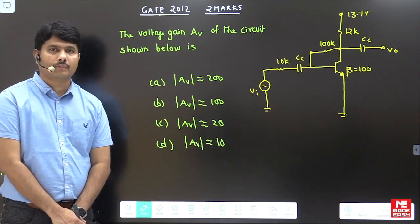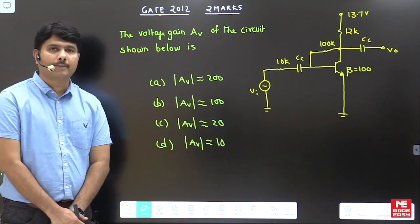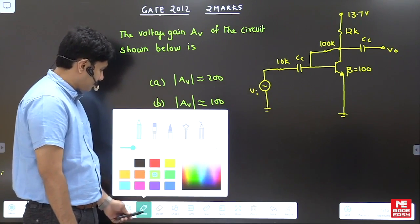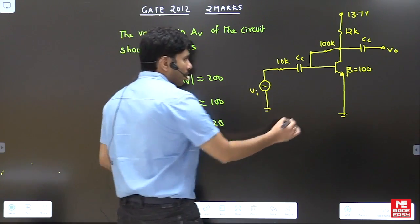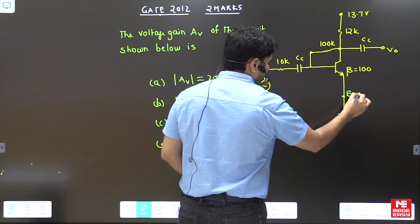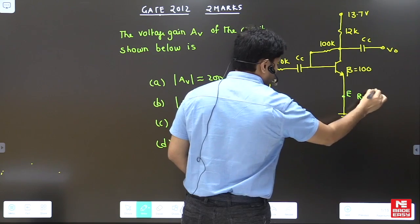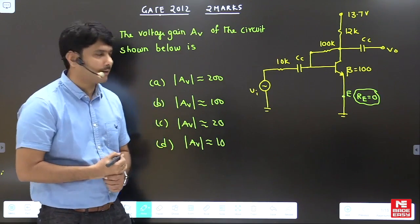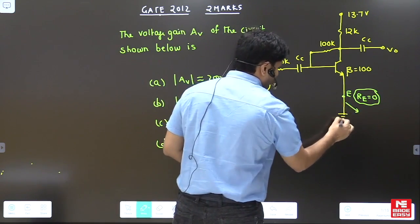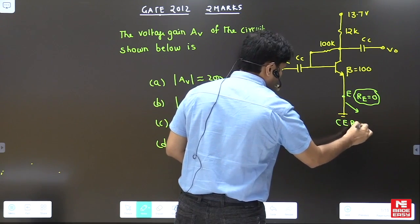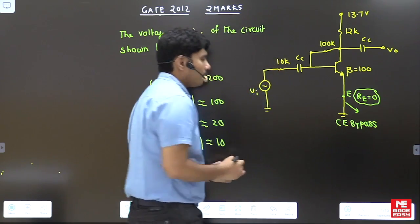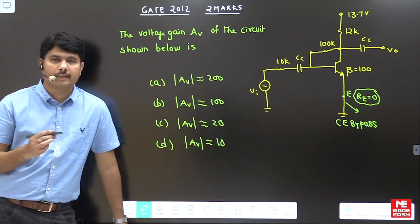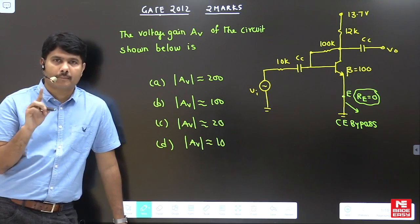First, a student should know whether this circuit is common emitter bypass or unbypassed. You estimate this by observing the circuit. If there is no Re at the emitter side - if Re is zero - that means there is no feedback. If there is no feedback in a common emitter amplifier, we call this a common emitter bypass amplifier. For such questions, we can straightforwardly solve the problems without complex modeling.